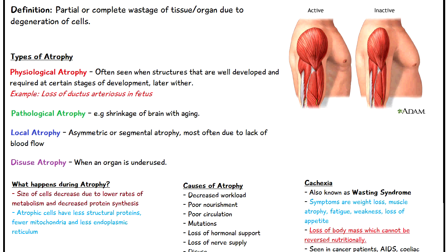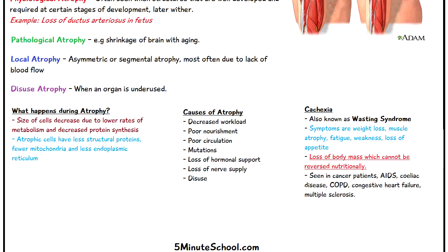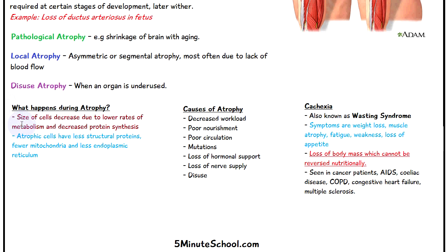Disuse atrophy is where we have degeneration of cells in an organ when it is not being used. During atrophy, the size of the cells will decrease due to lower rates of metabolism and decreased protein synthesis. Atrophic cells have less structural proteins, fewer mitochondria, and less endoplasmic reticulum, and the cells are also generally more likely to undergo apoptosis.